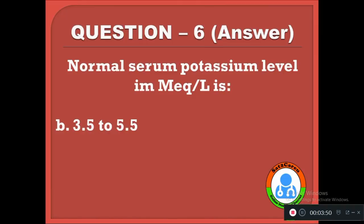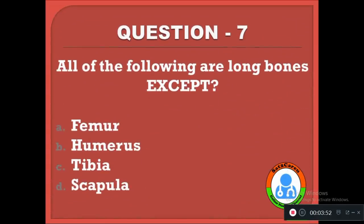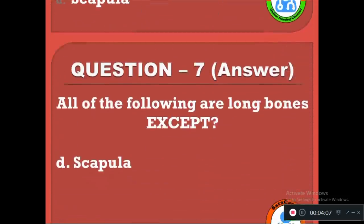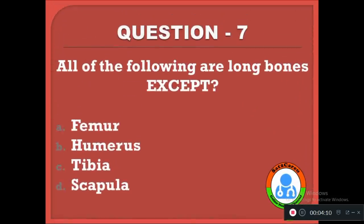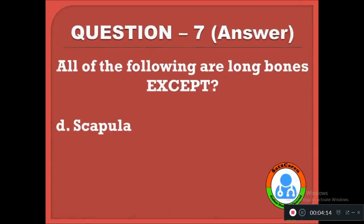Question 7: All of the following are long bones except — option A: femur, B: humerus, C: tibia, D: scapula. The correct answer is D. Except scapula, all other three bones — femur, humerus, and tibia — belong to long bone type. Scapula is not a long bone.